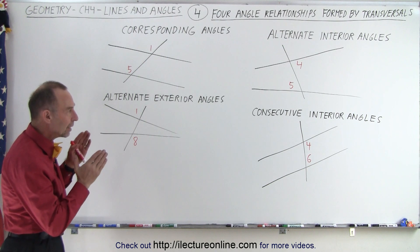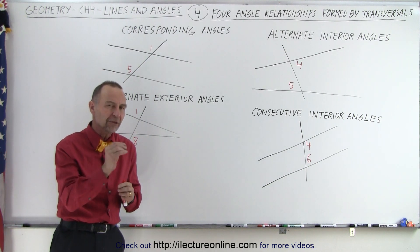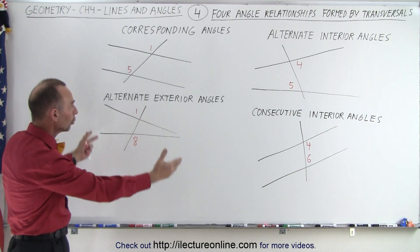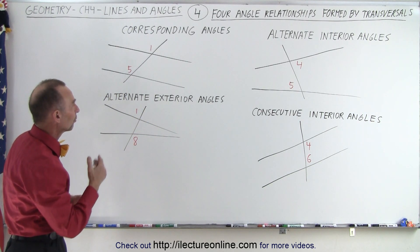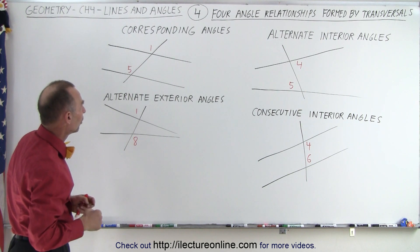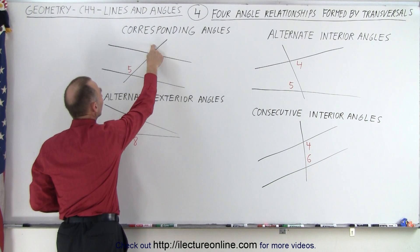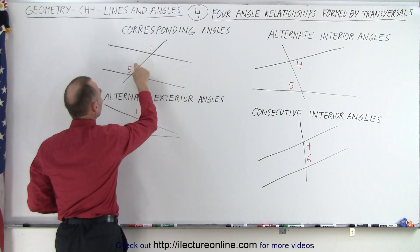Now, only if the two lines are parallel to one another do we have special significance to those relationships, but nevertheless, we should know the four different kinds of relationships formed by these transversals. First of all, we have what we call corresponding angles. Notice that in this case, angle one and angle five are corresponding.